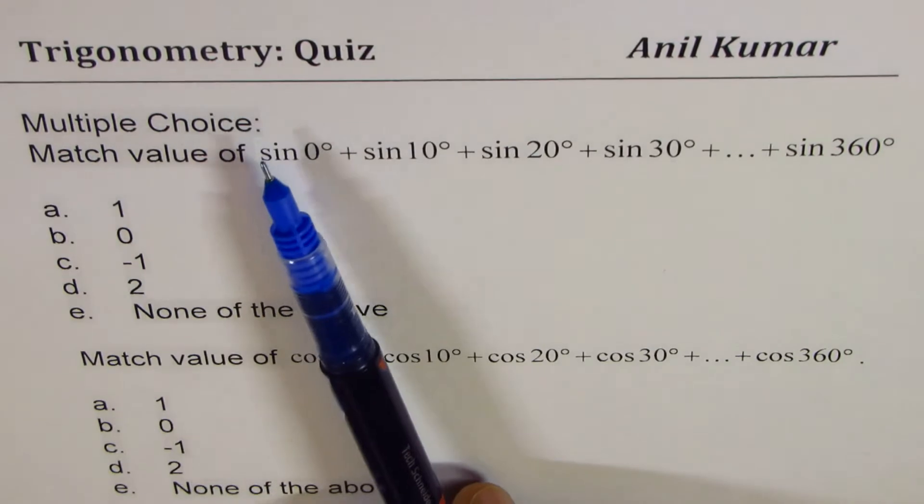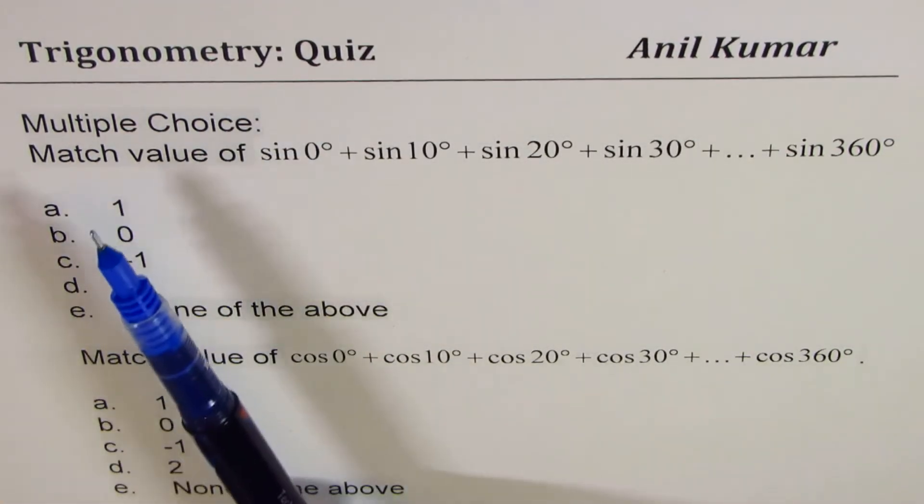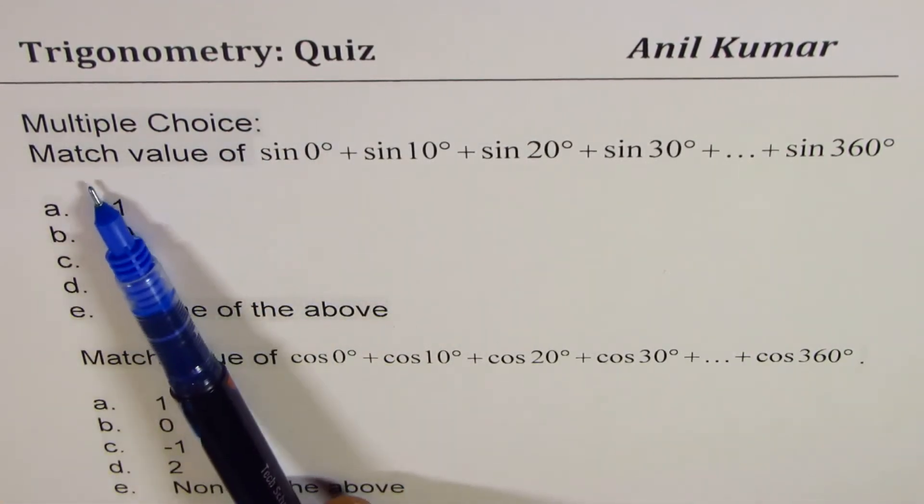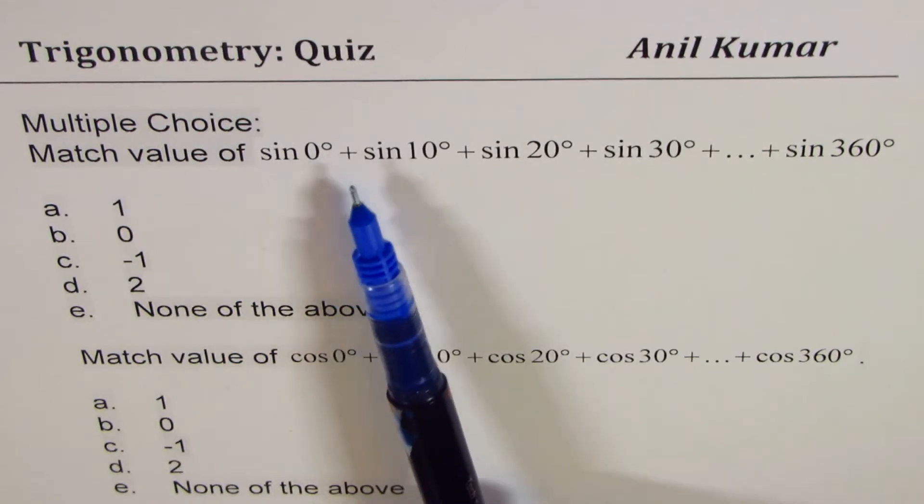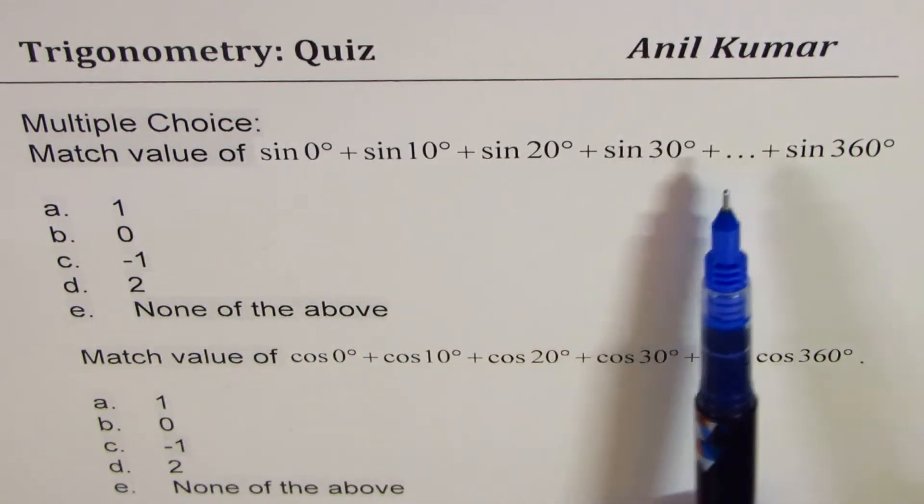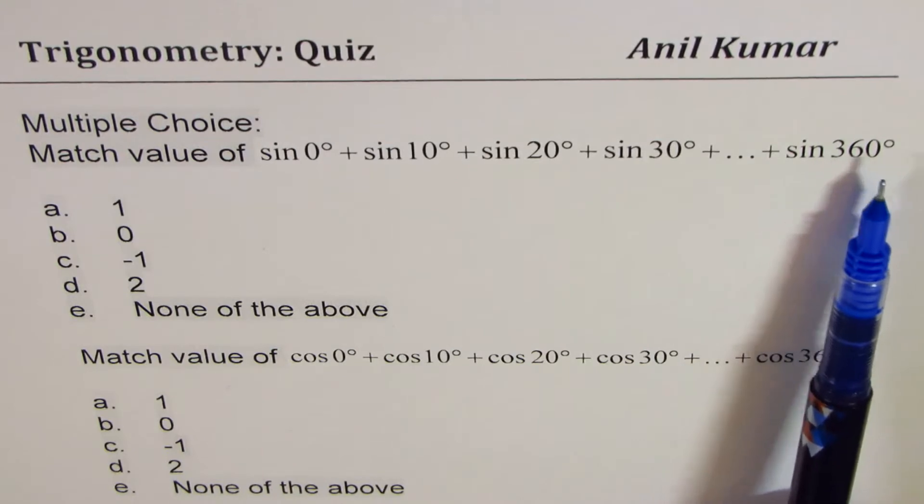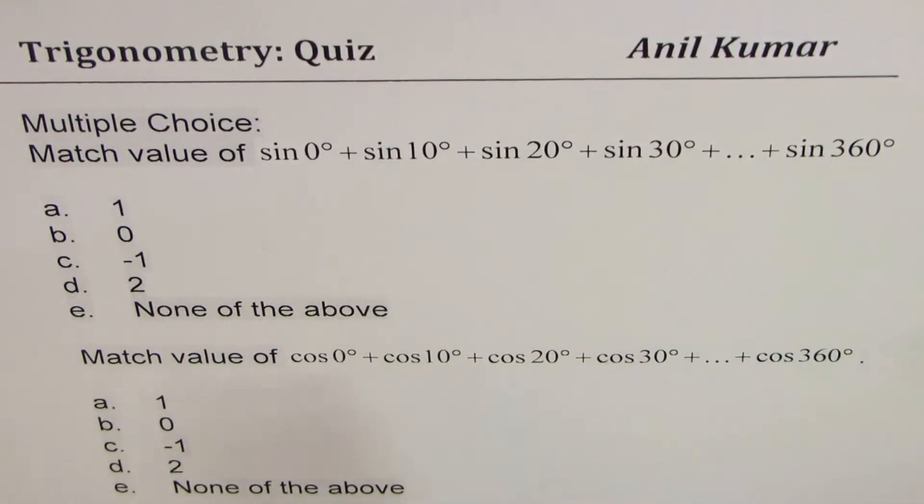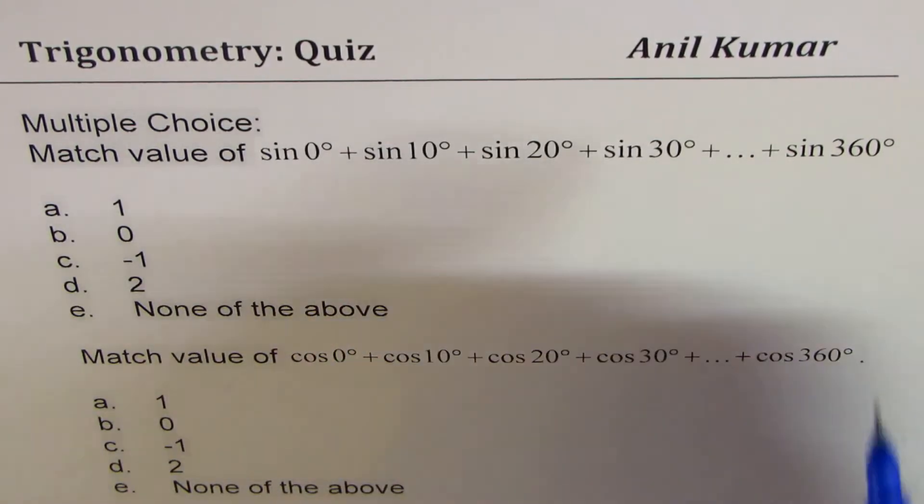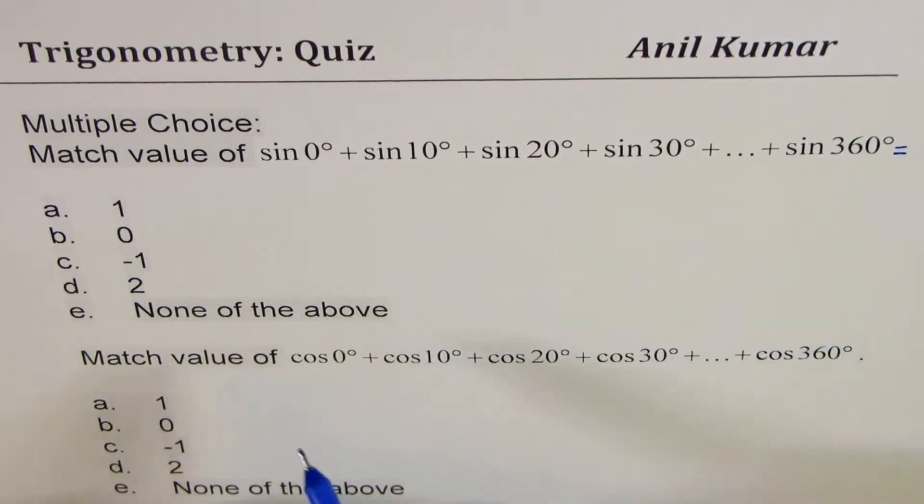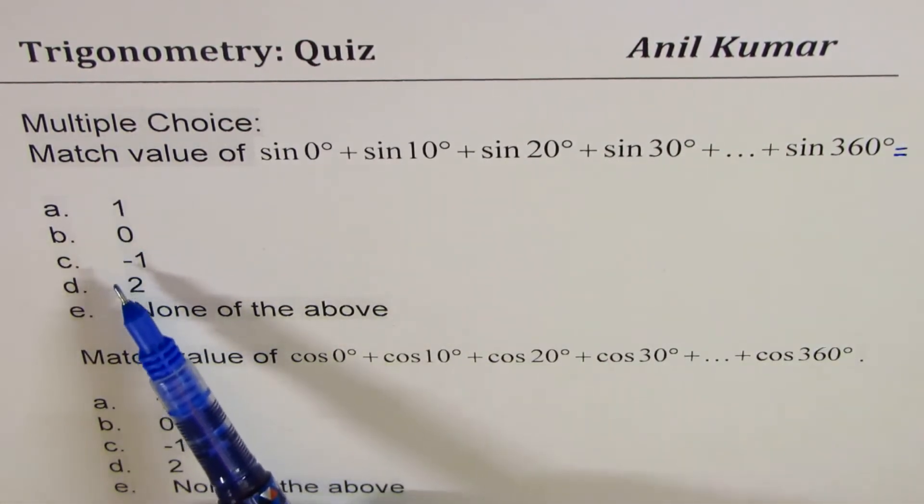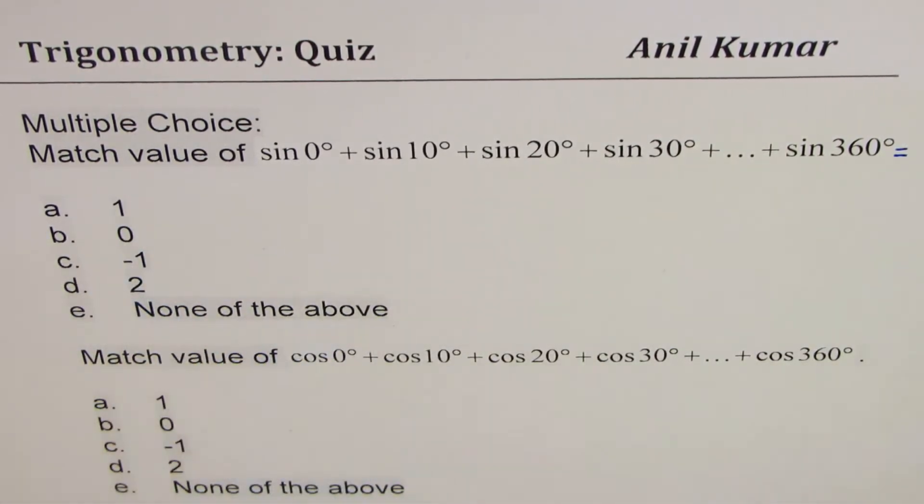Now the equation here is based on trigonometry. It's multiple choice. Match value of sine 0 degrees plus sine 10 degrees plus sine 20 degrees plus sine 30 degrees up to sine 360 degrees. All this is equal to what? Choices are 1, 0, minus 1, 2, or none of the above.